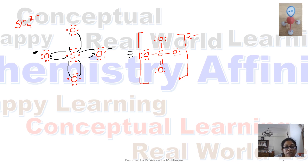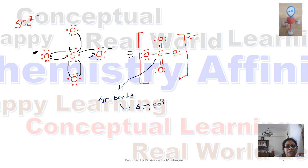Now we have to check what is the hybridization of sulfur. For that we have to check the number of sigma bonds and lone pairs connected with sulfur. There is no lone pair, and it has 4 sigma bonds. So sulfur has 4 sigma bonds, meaning sulfur is sp3 hybridized. Since no lone pairs are present, electronic geometry is equal to molecular geometry, so the geometry will be tetrahedral. We can draw the tetrahedral geometry properly.